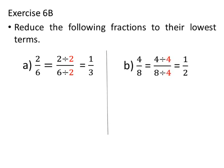Second: Reduce 4 by 8 to its lowest term. The HCF of 4 and 8 is 4. So we divide both the numerator and the denominator by 4. Thus, 4 divided by 4 upon 8 divided by 4 equals 1 upon 2. The lowest term of 4 by 8 is 1 by 2.